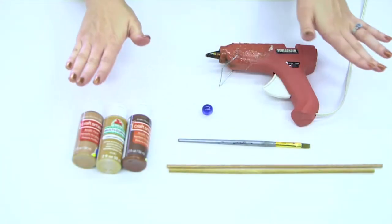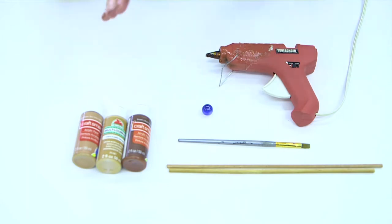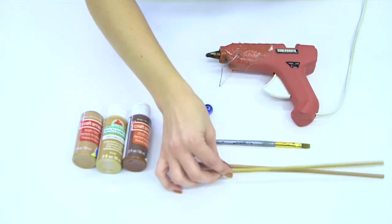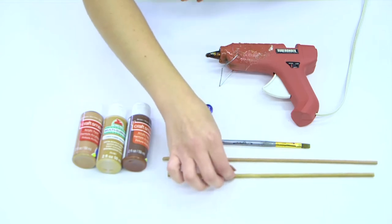This is all the materials you will need for this project. The most important part is your wand base which are just some wooden dowels you can find at any local craft store.